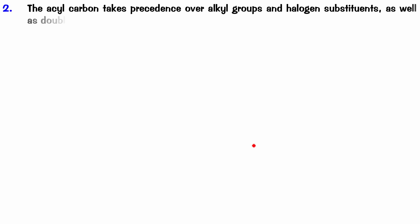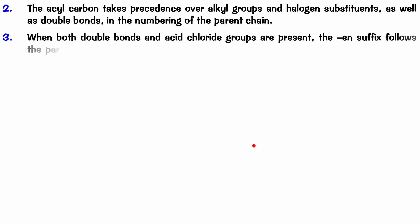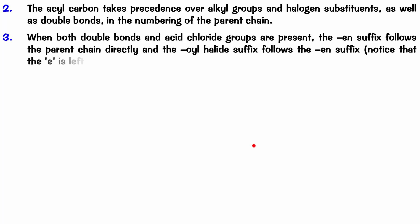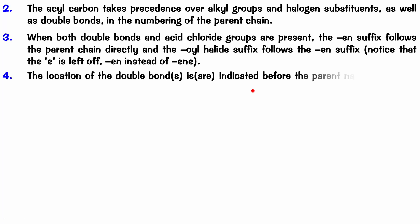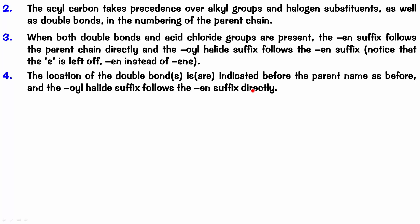The acyl carbon will take precedence over double bonds and any other substituents in numbering. When both double bonds and acid halide groups are present, you simply name the corresponding alkenoic acid and remove the 'eic acid' ending — so alkenoic acid becomes alkenoyl halide. You also need to write the number of the double bond before the parent name, and the 'oyl halide' suffix follows the 'ene' suffix directly.